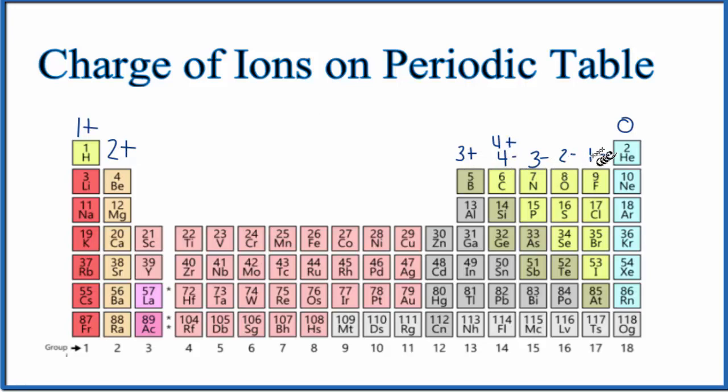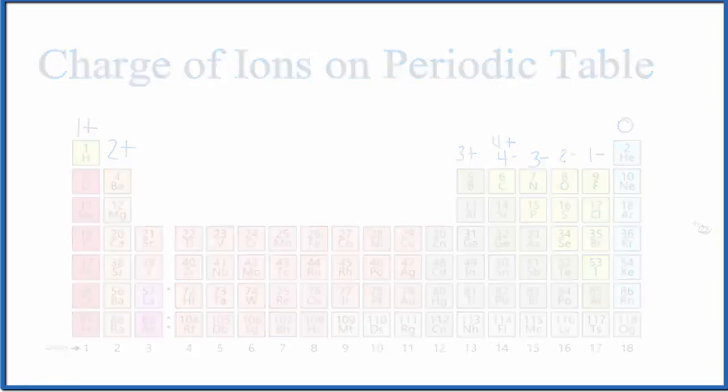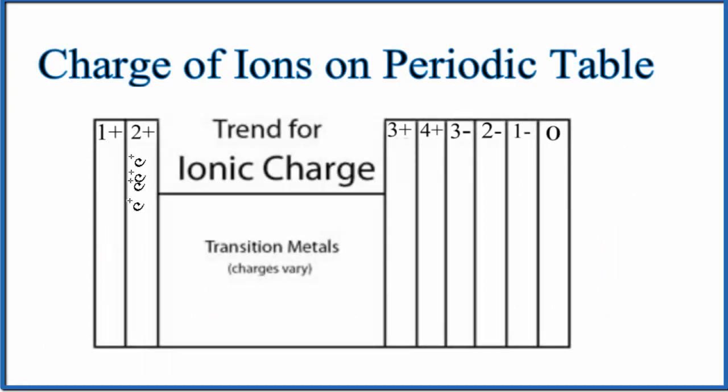You can think of it this way: group 1 is 1+, we go 2+, skip the transition metals, 3+, 4+ or -, 3-, 2-, 1-, 0. It's kind of like a mountain. That's the trend for ionic charge, but this is a general trend. Let's look at a more detailed periodic table with ionic charges listed.